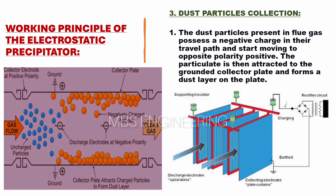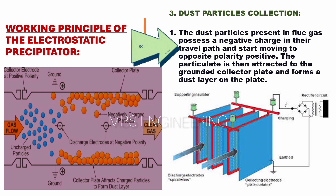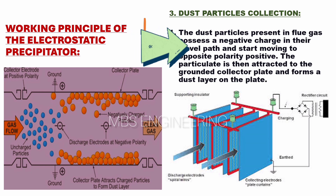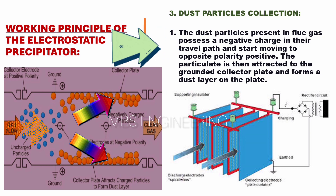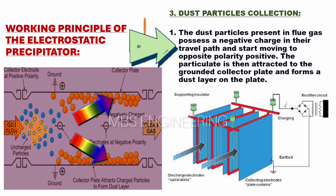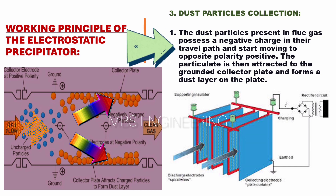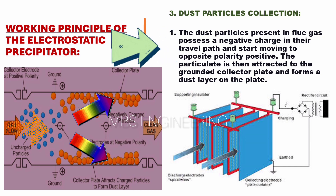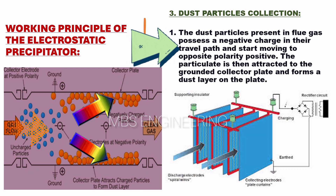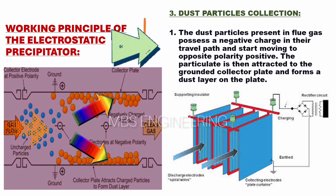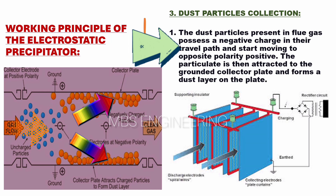The third step of the electrostatic precipitator's working principle is dust particle collection. The dust particles present in flue gas possess a negative charge in their travel path and start moving to the opposite polarity — positive. The particulate is then attracted to the grounded collector plate and forms a dust layer on the plate.